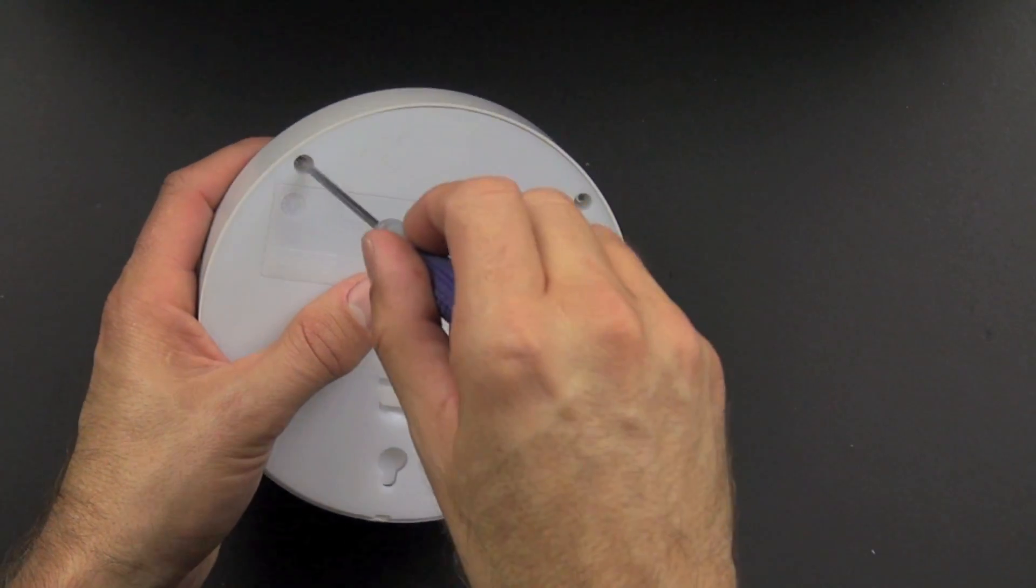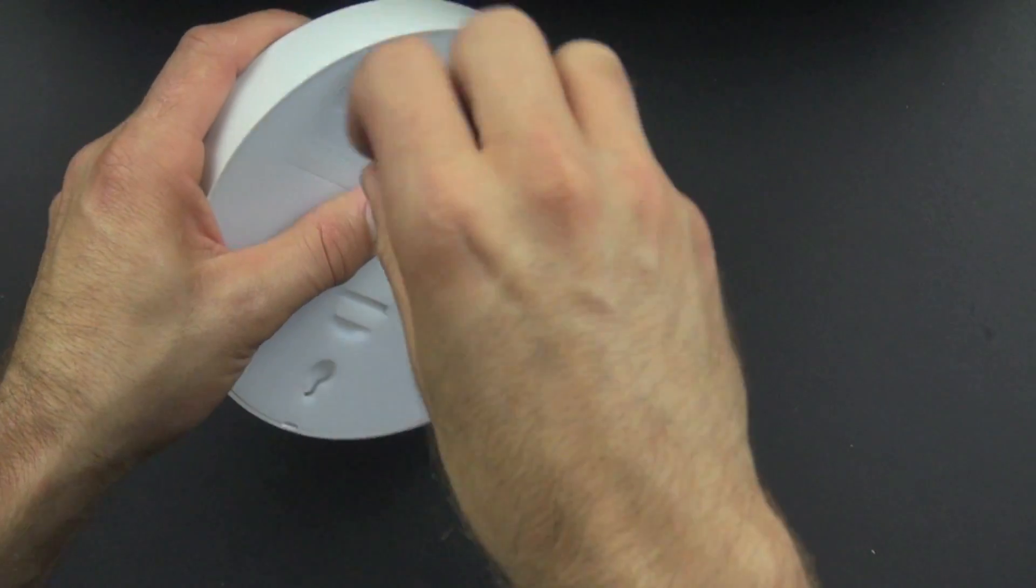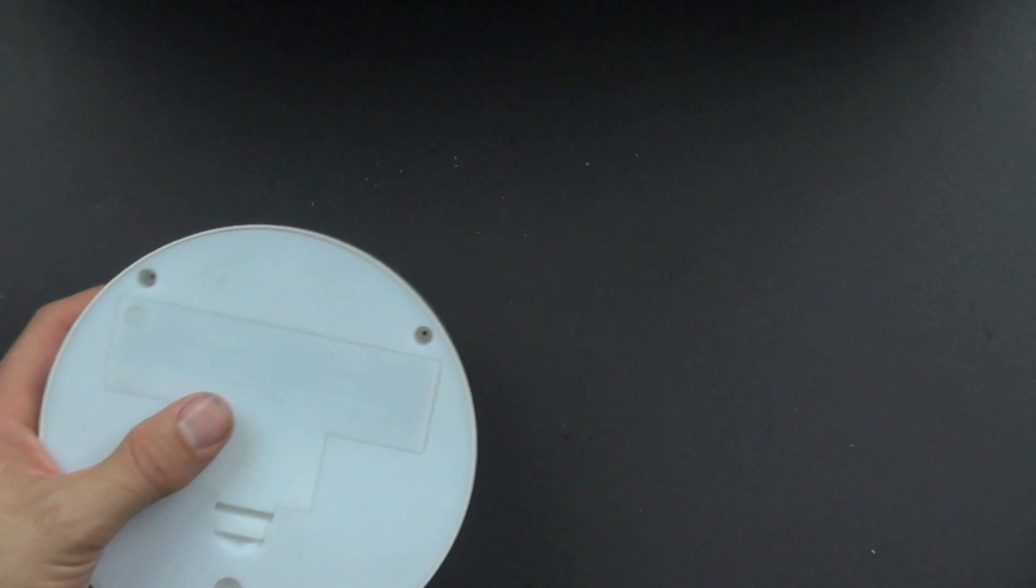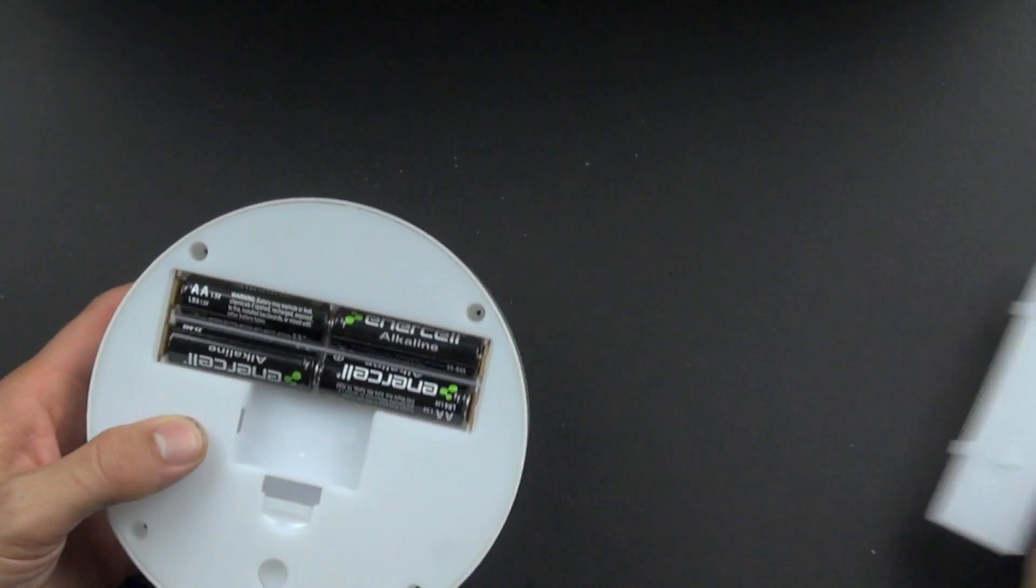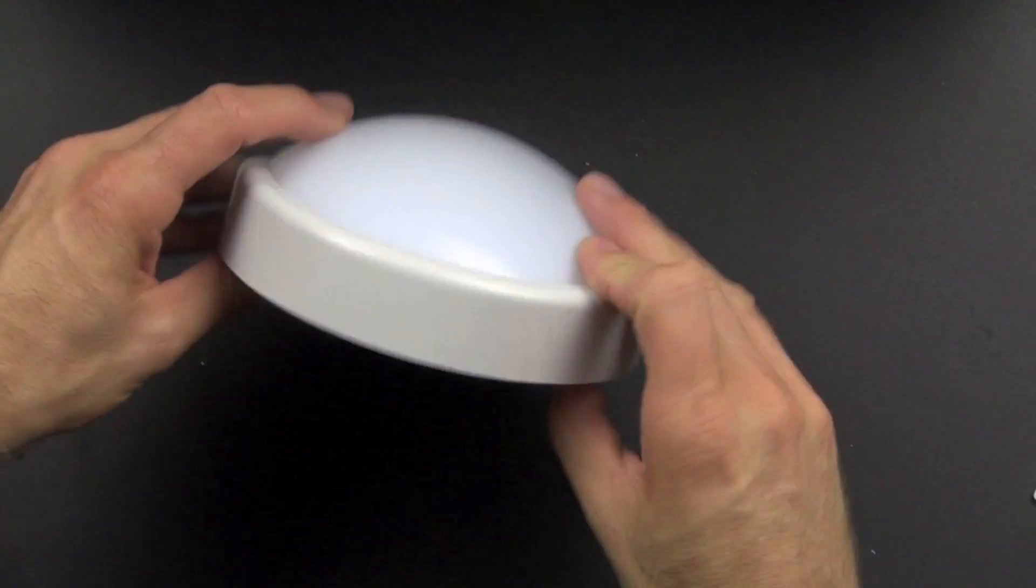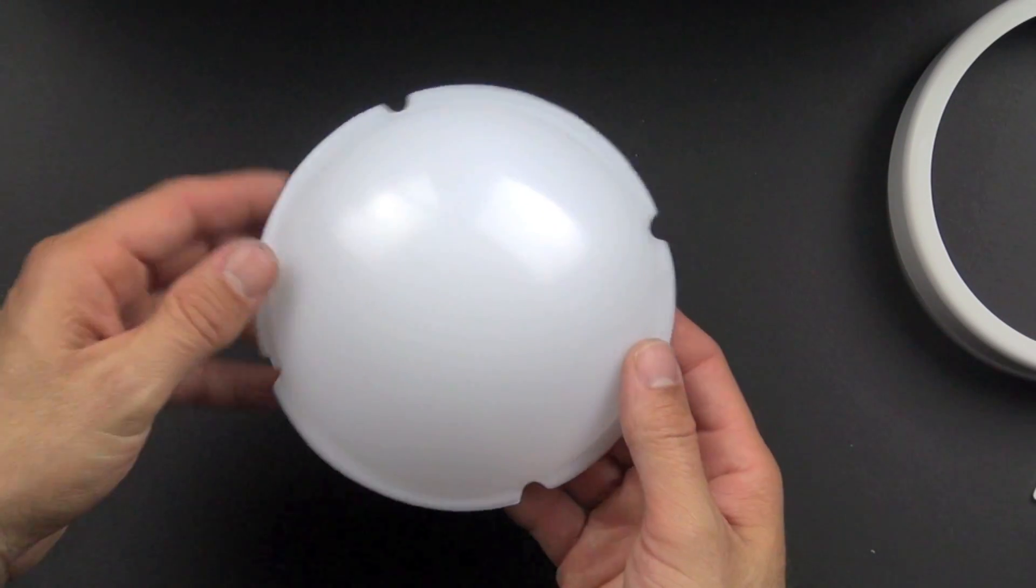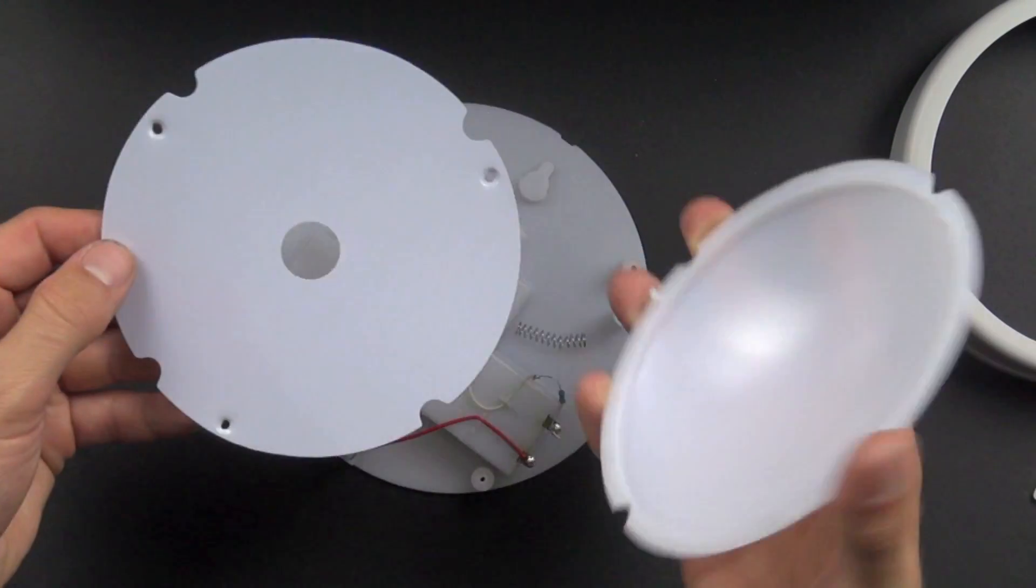I'm going to leave the batteries in place because I want to show you what it looks like with the top off when the light's on. Okay. So we got our screws out and this is the battery holder. You got four double A batteries there. And so we'll lift the bezel off and here's the top portion. And this is the top cover.